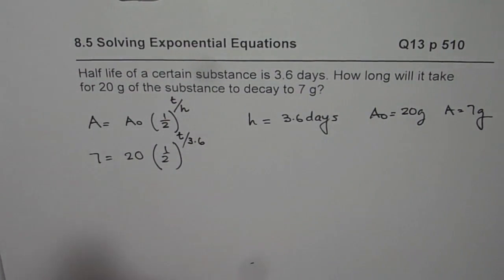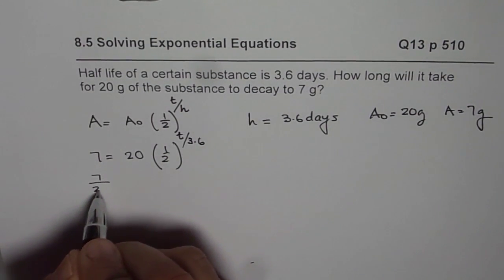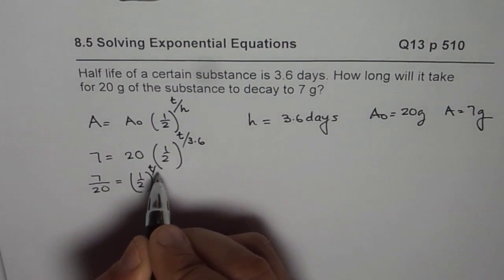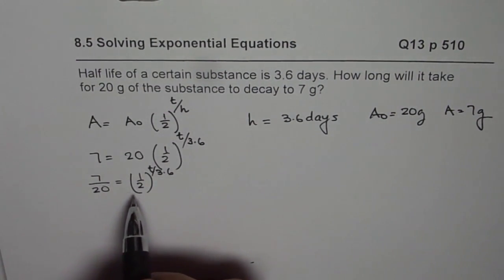So to solve this, we will first divide 7 by 20. So we get 7 over 20 equals half to the power of t over 3.6.